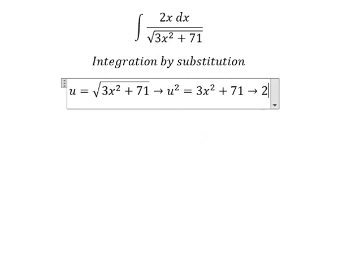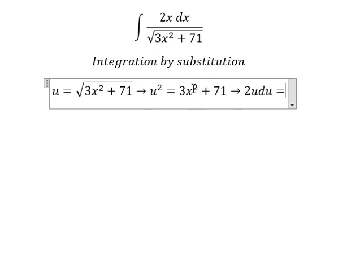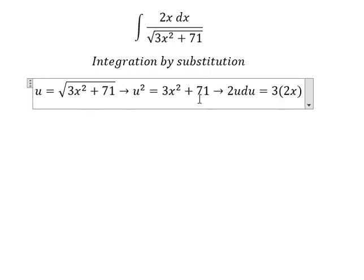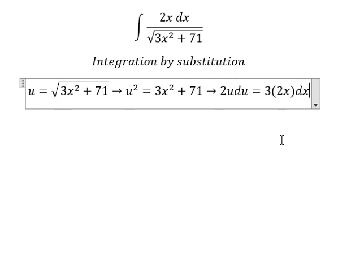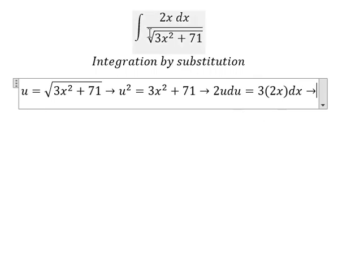First derivative of x squared, we have 2x. This constant gives us zero. Next, because we don't have the number 3 here, we need to divide both sides by 3.